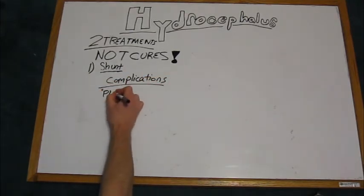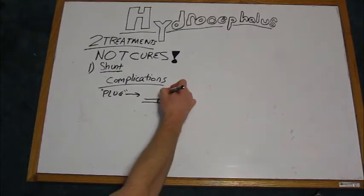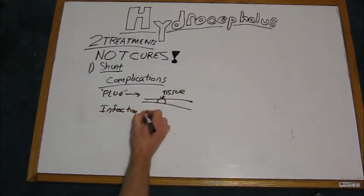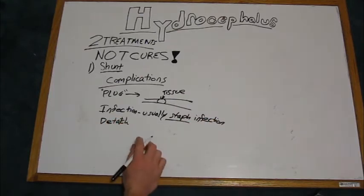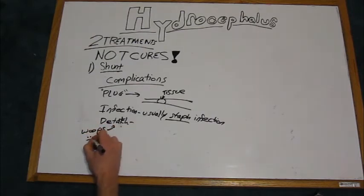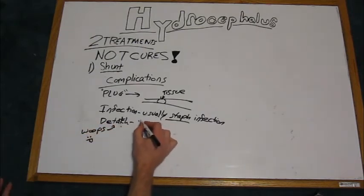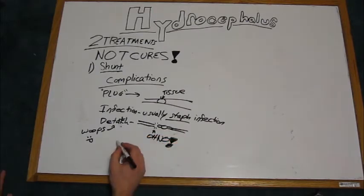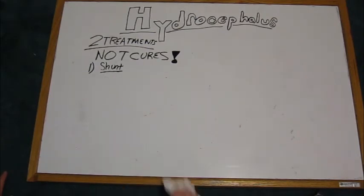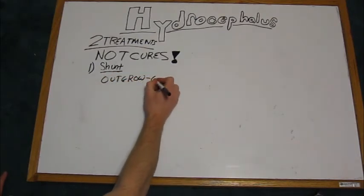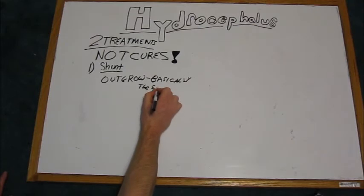With the shunt, there are many complications, such as a plug in the catheter caused by tissue, infection, which is usually a staph infection, and detaching of the catheter from the shunt. With age, a patient can also outgrow their catheter, which would be the same as the catheter detaching.